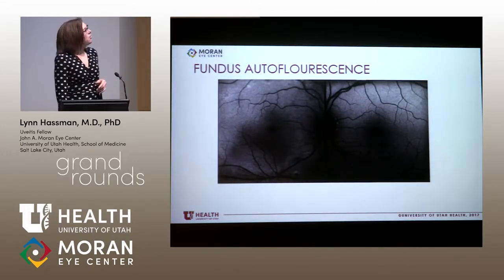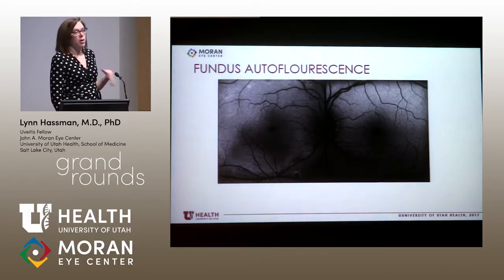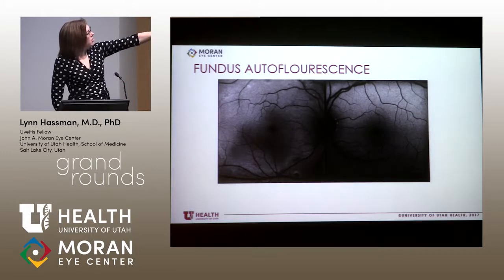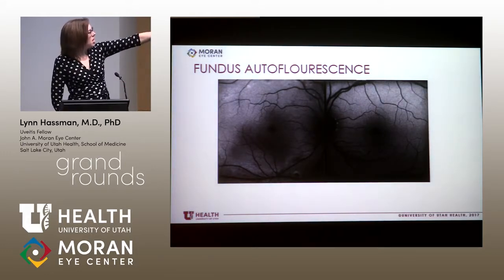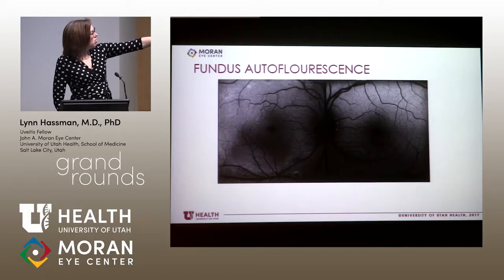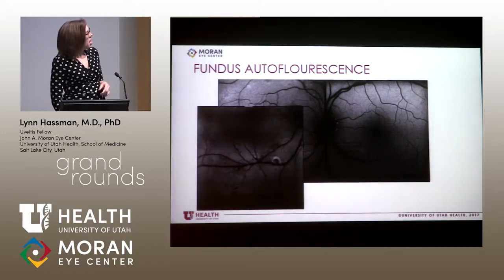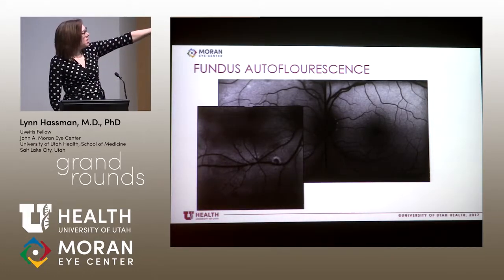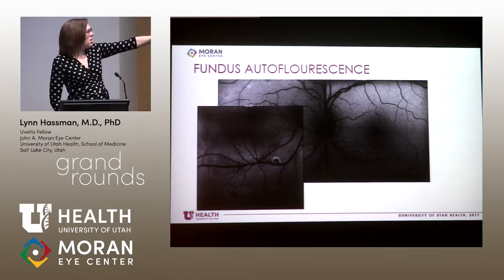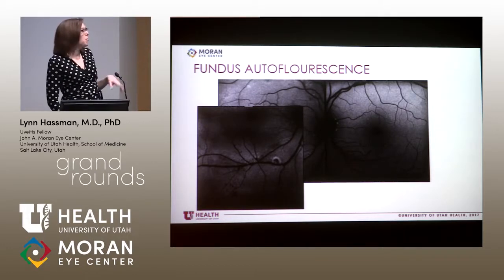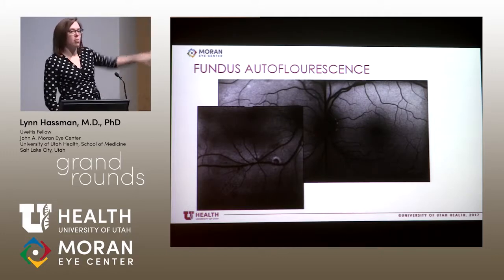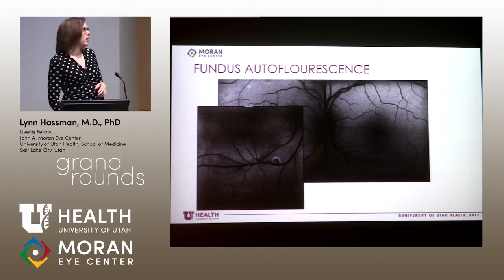Her fundus autofluorescence is normal in the center of the macula. But along the inferior arcades, especially in the right eye, there's a hyper-autofluorescent lesion with a hypo-autofluorescent center. Zooming in, it looks like a target. There are also other hyper- and hypo-autofluorescent changes in the area of the white lesions.